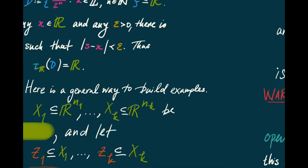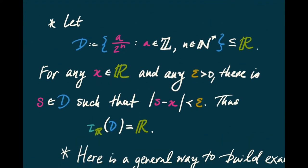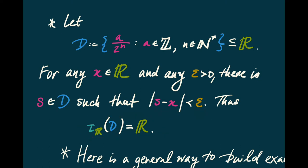Here's another example: the dyadic rationals — fractions a over 2^n where a is an integer and n is a natural number — sitting inside the real line. Once again we have this density property: for every point x of R and every epsilon greater than zero, there is a dyadic rational within epsilon of x. In other words, every point of R can be approximated by a dyadic rational to any tolerance you like, which exactly means that this set D is dense in R.